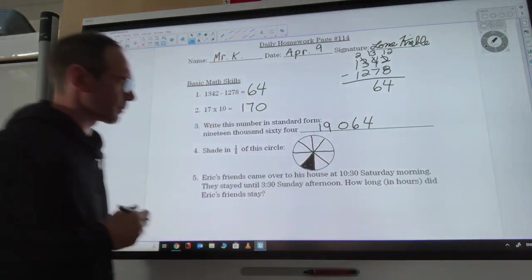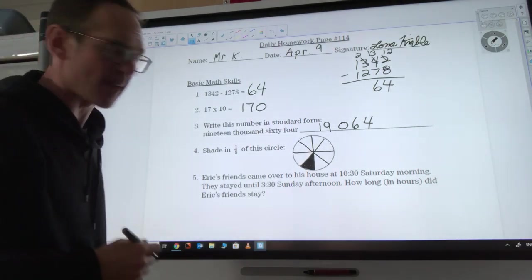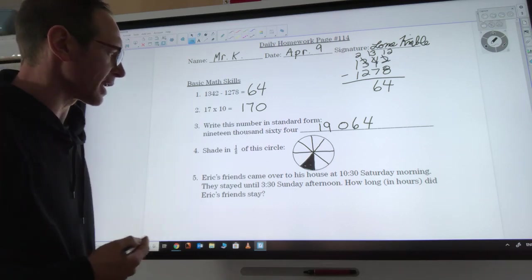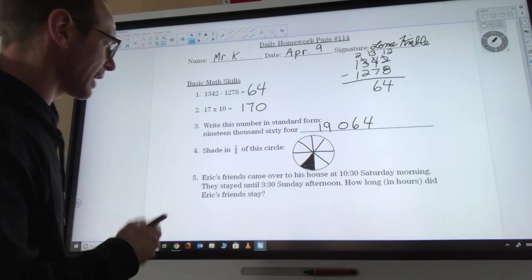All right, let's get to that last question. It says Eric's friends came over to his house at 10:30 Saturday morning. They stayed until 3:30 Sunday afternoon. How long in hours did Eric's friends stay?